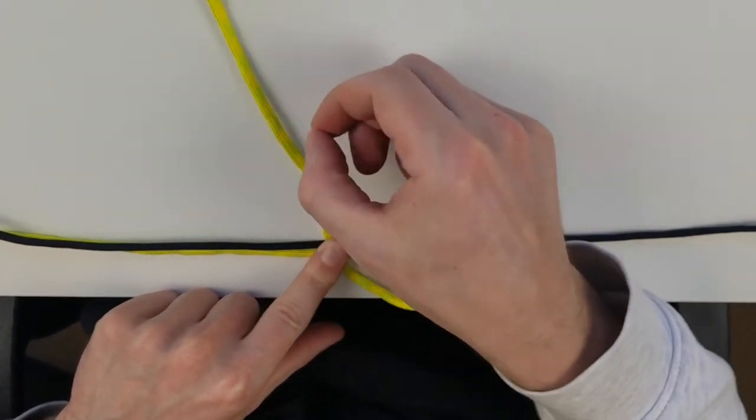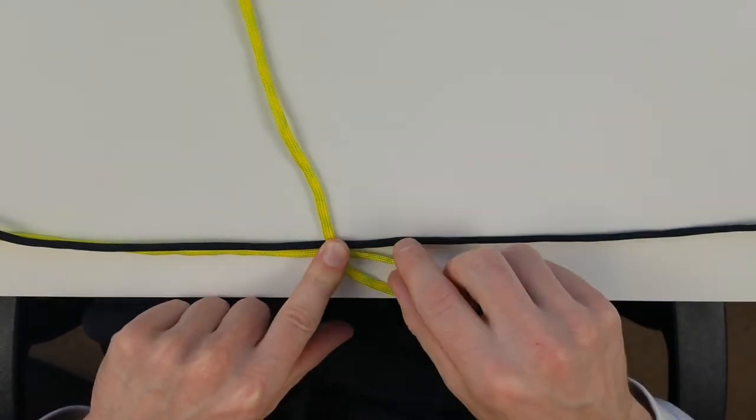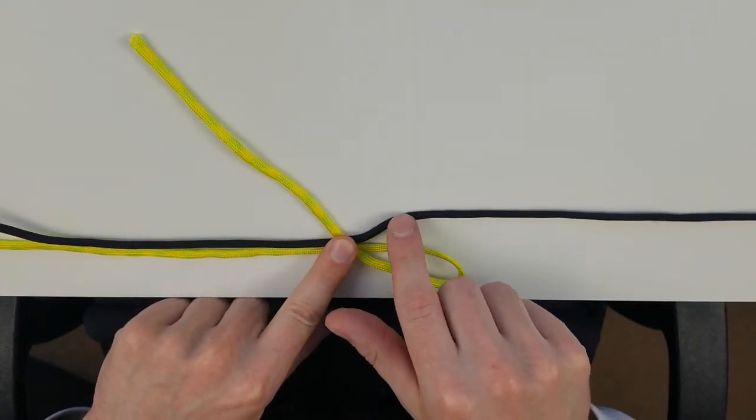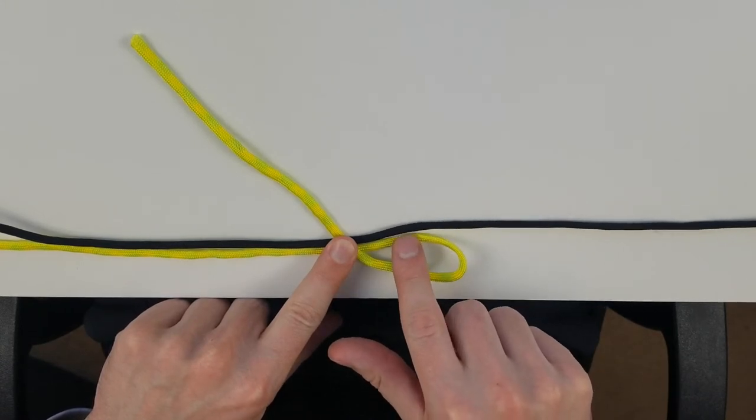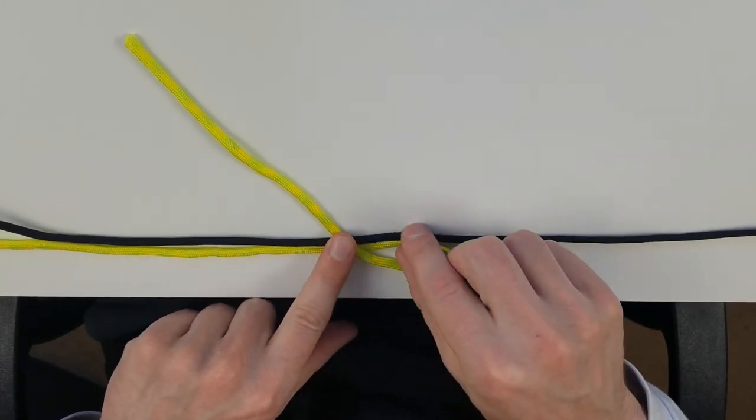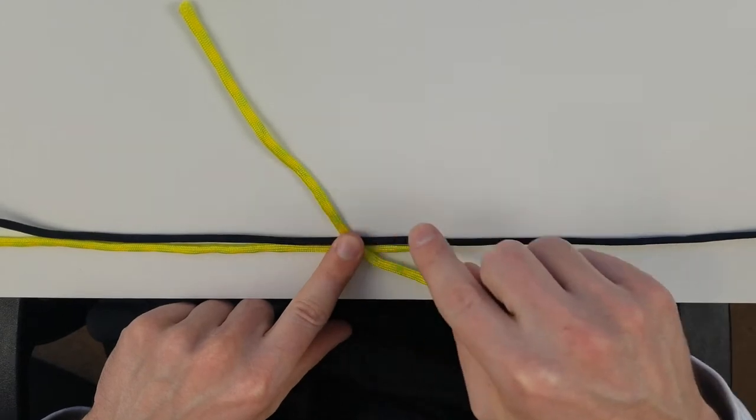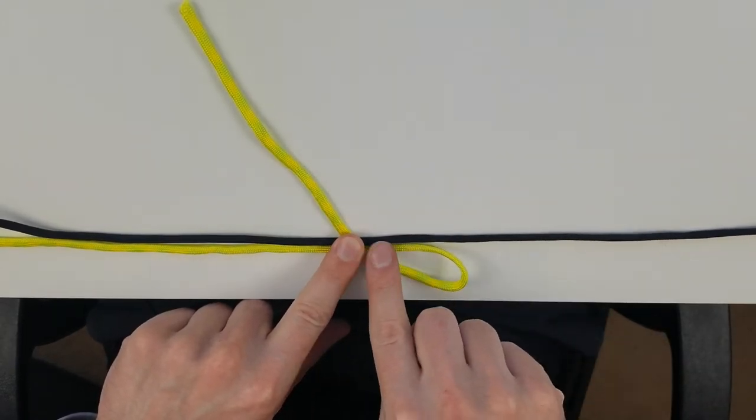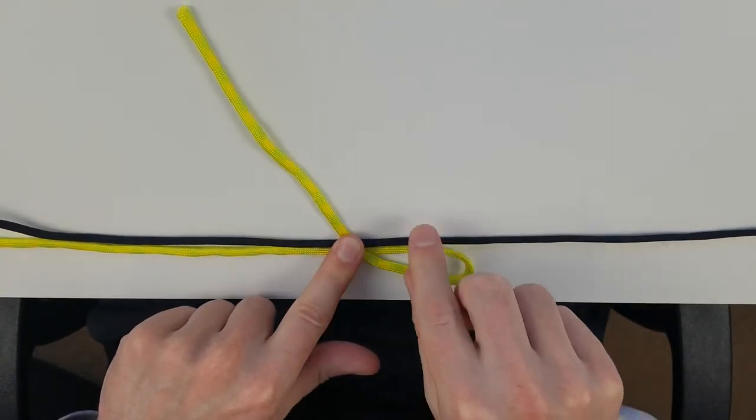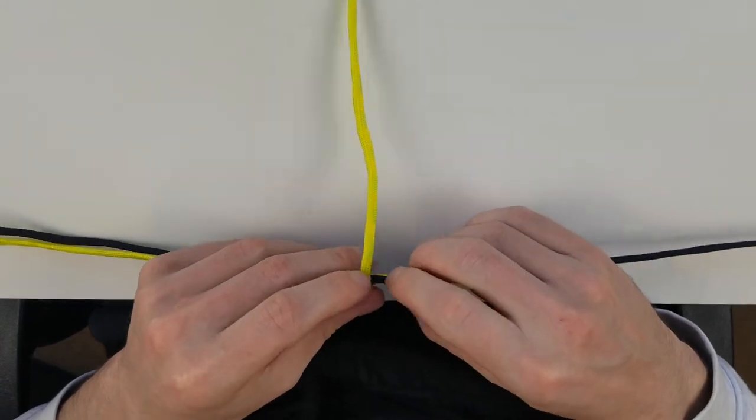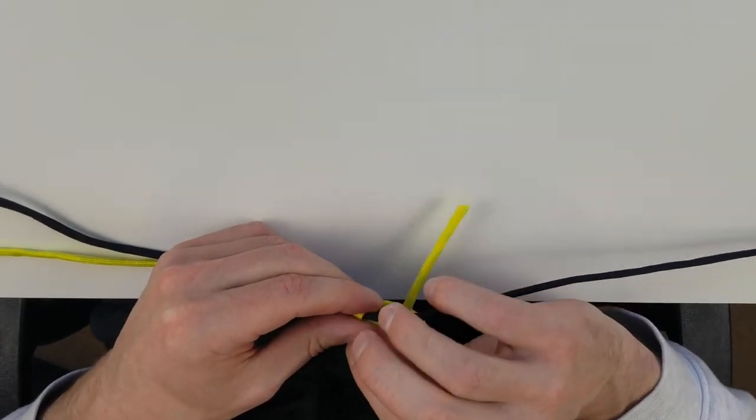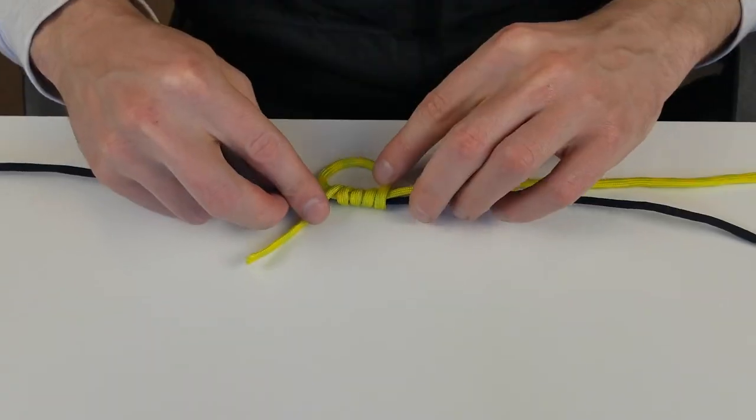We're going to take our tag end and wrap it around both strands of lines, the black line and the yellow line. It's going to go through the loop. We're going to take the monofilament tag end and wrap it five times going in this direction around both. One, two, three, four, five.